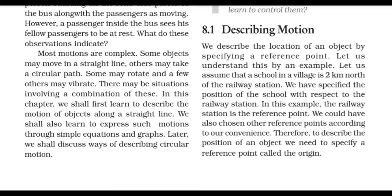Describing Motion. We describe the location of an object by specifying a reference point. For example, a school in a village is 2 km north of the railway station. We have specified the position of the school with respect to the railway station.